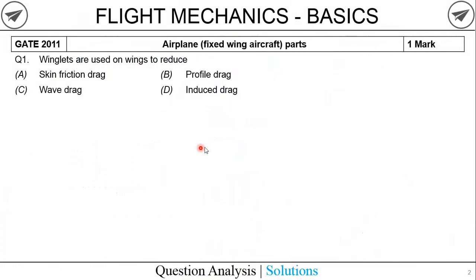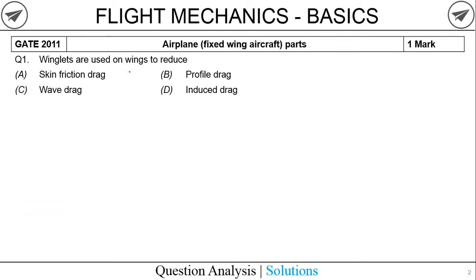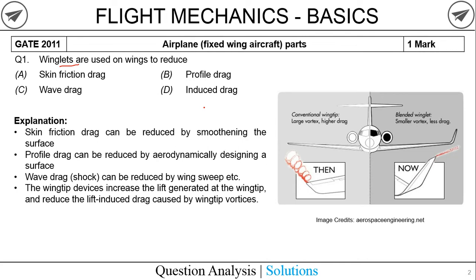Here is the first question, asked in the year 2011 - a one-mark question. The question reads: winglets are used on wings to reduce... basically asking the purpose of the winglet. We have four different options, so let's analyze how each individual option operates.